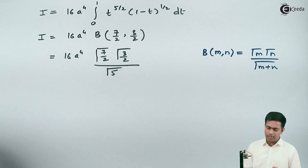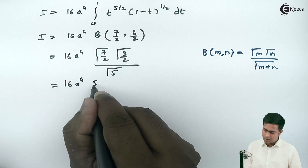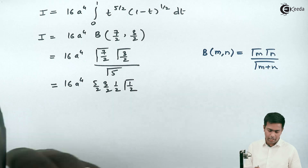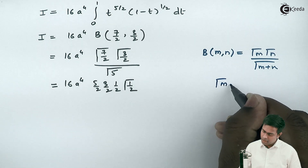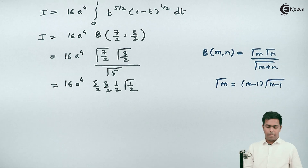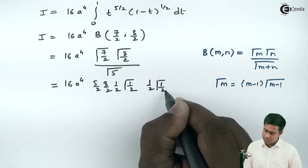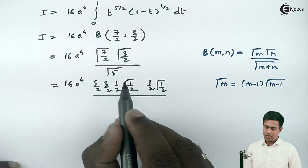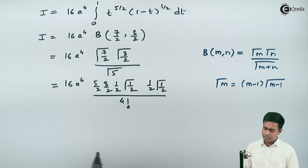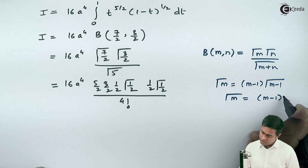So this term gives us 16a raised to 4 times (5/2)(3/2)(1/2) times gamma(1/2) squared. I am using the recurrence property gamma(m) equals (m minus 1) times gamma(m minus 1) to expand gamma(7/2) and gamma(3/2). Gamma(5) is nothing but 4 factorial, using the property gamma(m) equals (m minus 1) factorial.